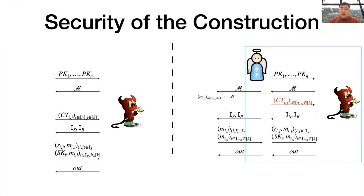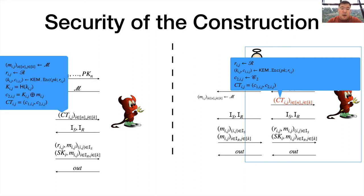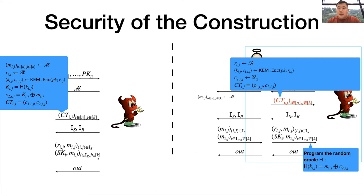In this case, the simulator doesn't know the plaintext messages when generating the ciphertexts, so it has to cheat here. In more detail, the simulator will first run the encapsulation algorithm of the KEM scheme honestly to generate the first part of the ciphertext, but it samples the second part of the ciphertext uniformly at random. This is indistinguishable from an honestly generated ciphertext due to the security of the KEM scheme and the fact that the random oracle will output a random value on an input that has not been queried before.